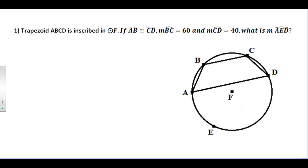Let's try a few examples here. Example number one: trapezoid ABCD is inscribed inside circle F. We know that segment AB is congruent to segment CD.